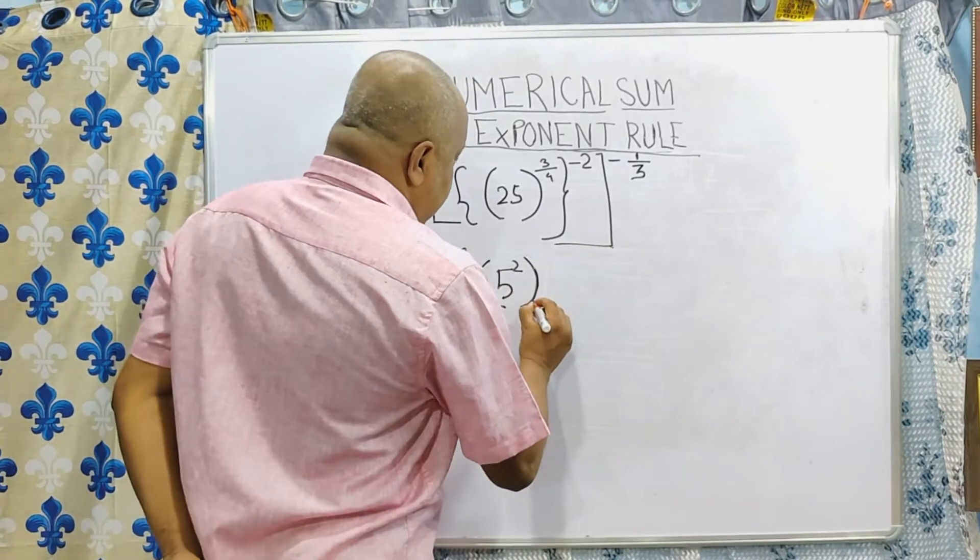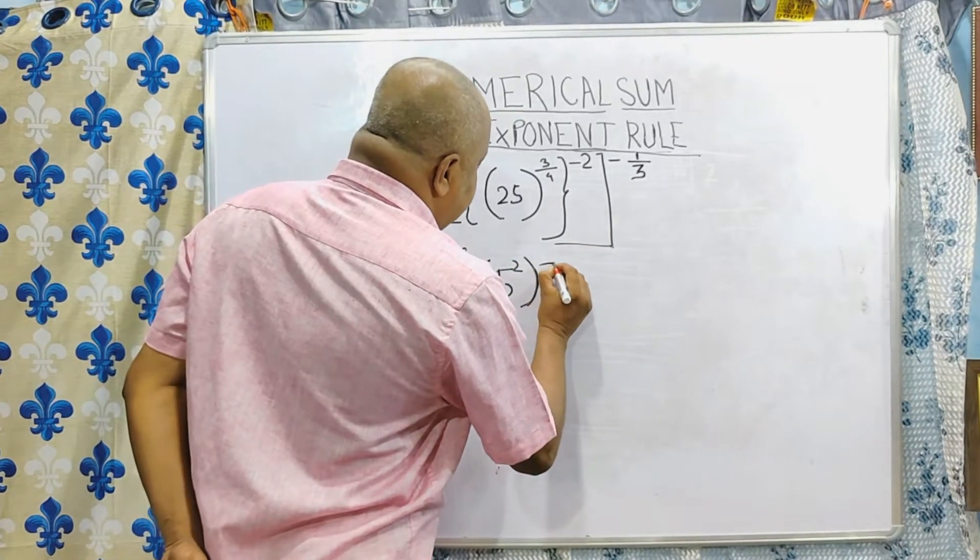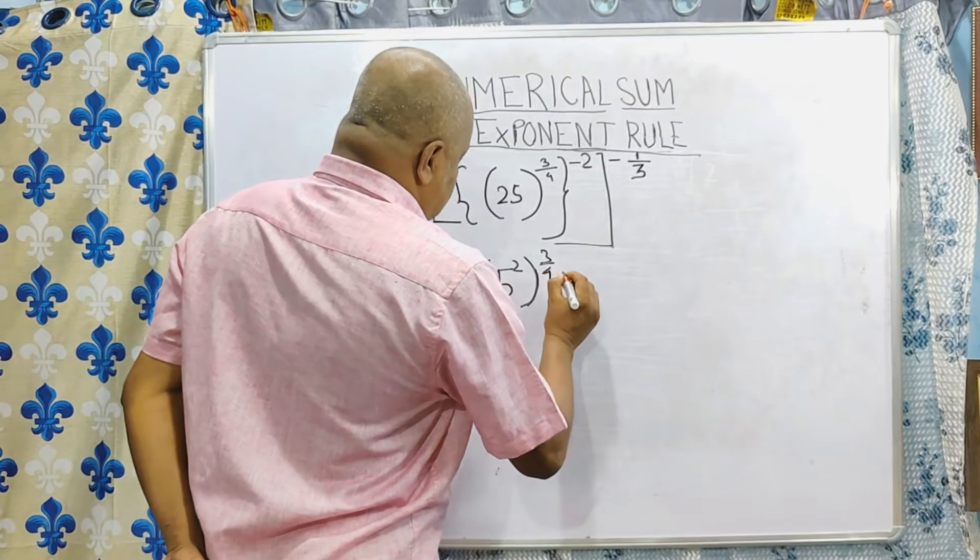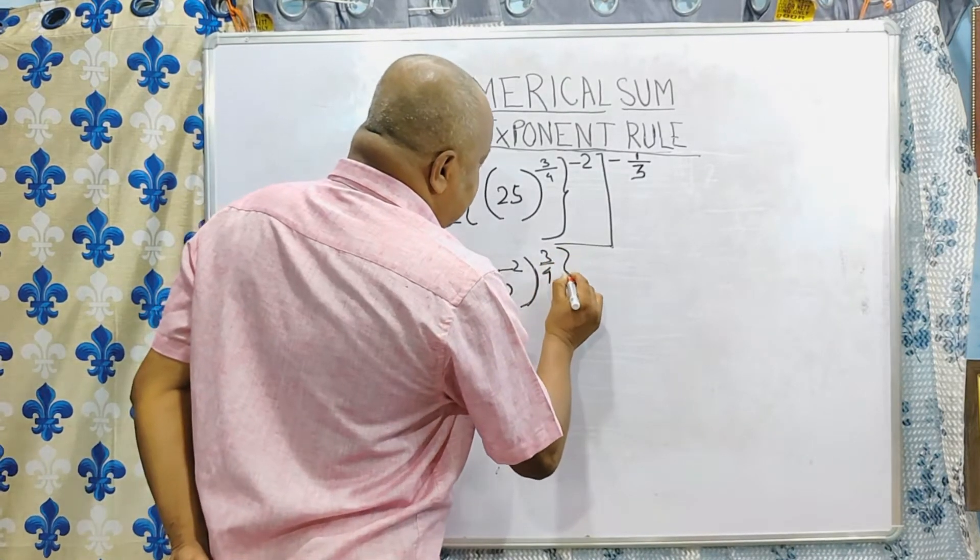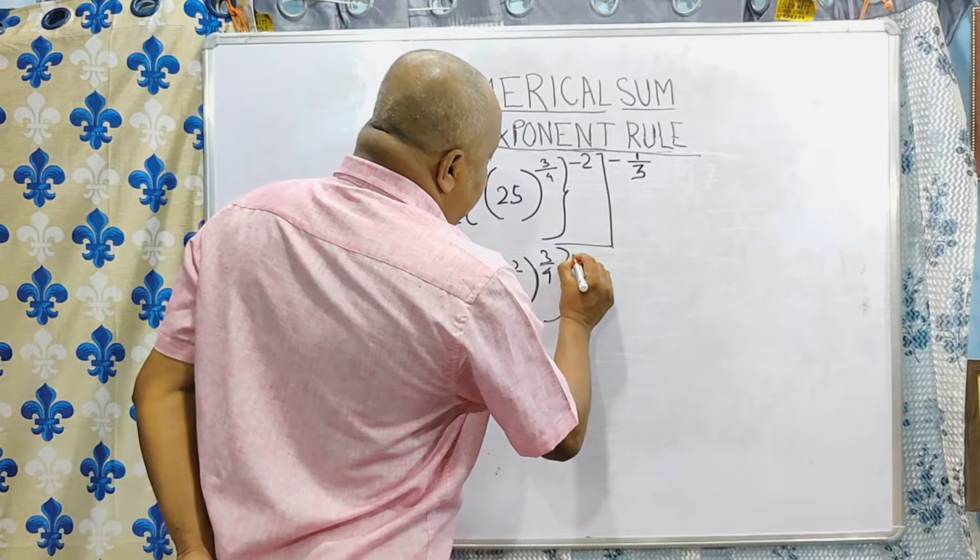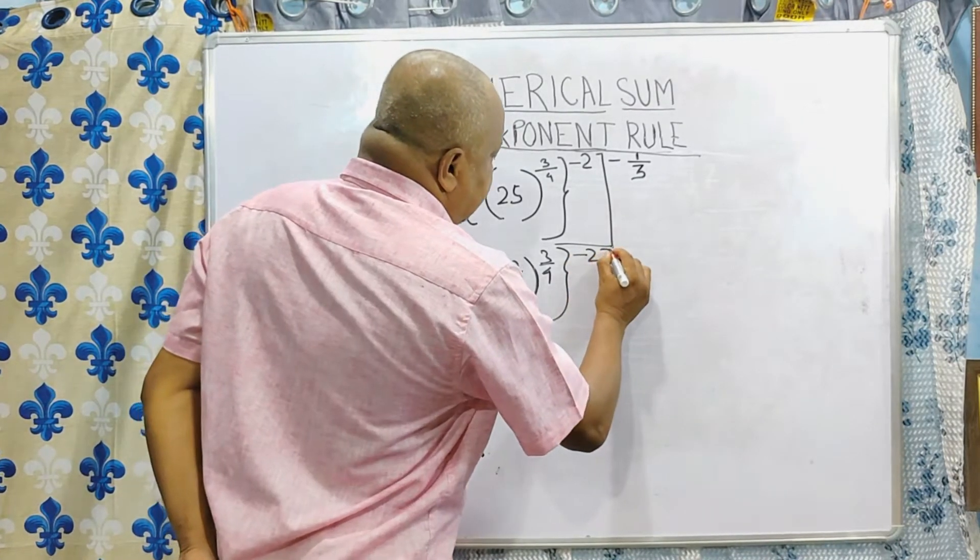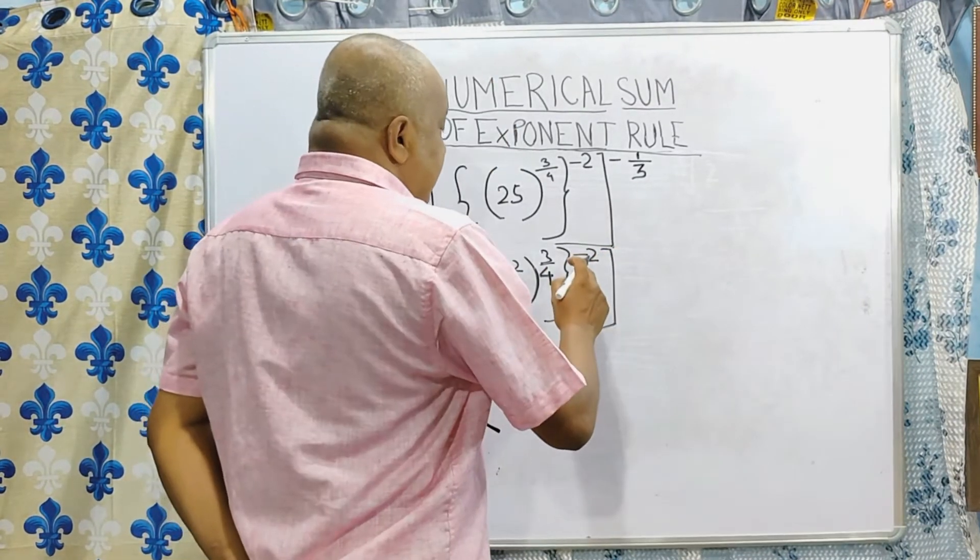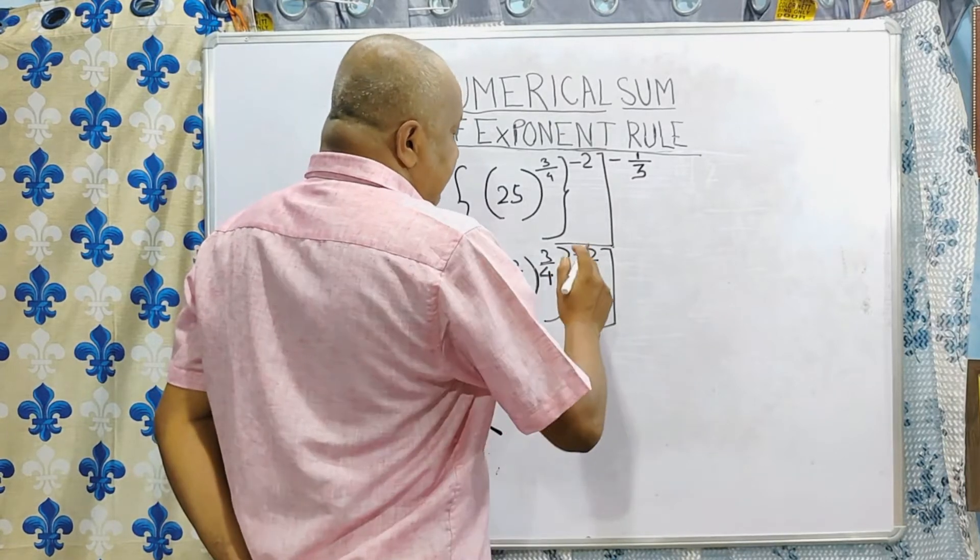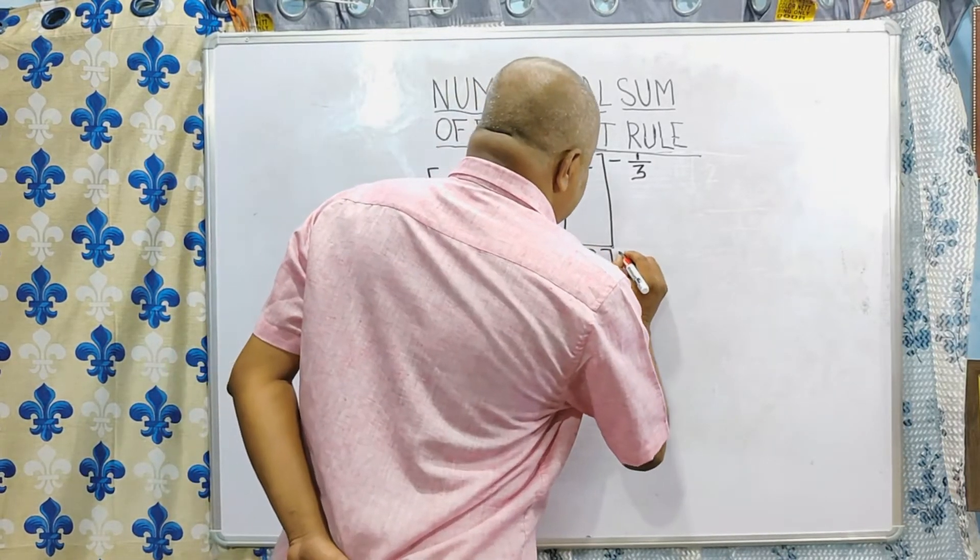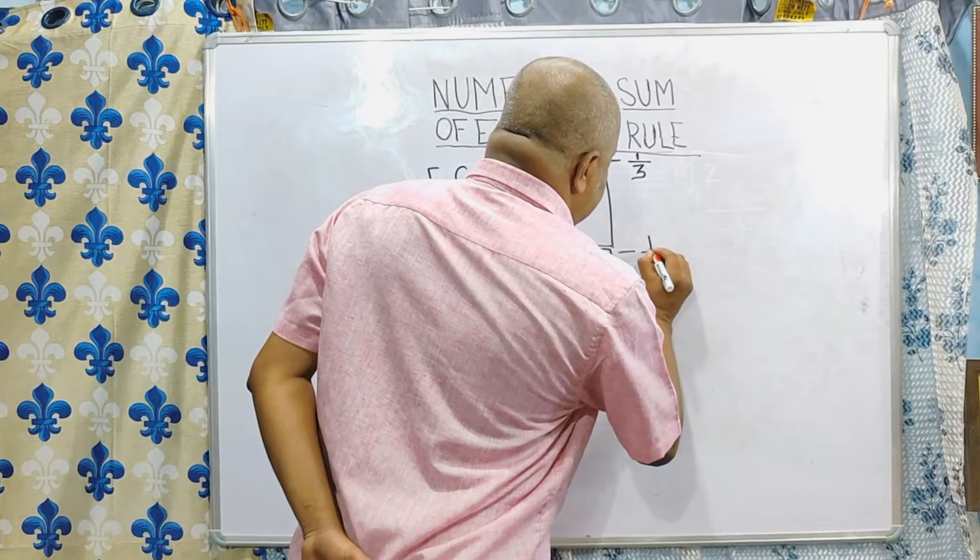Then powers come 3 by 4. Then second bracket closed, power comes minus 2. Then third bracket closed, power comes minus 1 by 3.